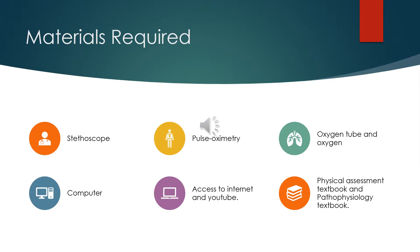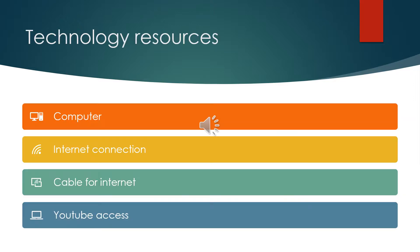The following materials are required for this class: a stethoscope, pulse oximetry, oxygen tubing and oxygen or simulated oxygen, a computer, access to the internet and YouTube, and our physical assessment textbook. Other technology resources needed are the computer and internet connection, cable for your internet connection, and YouTube access.